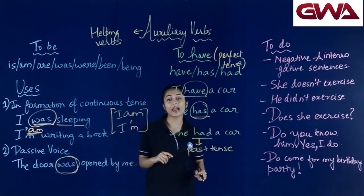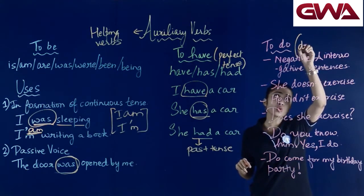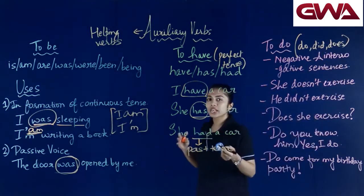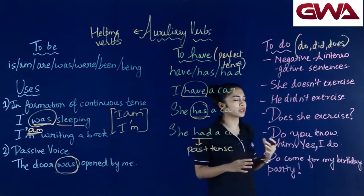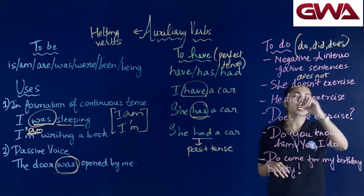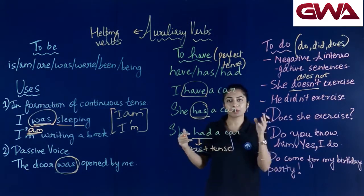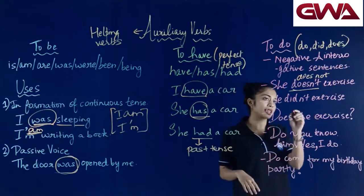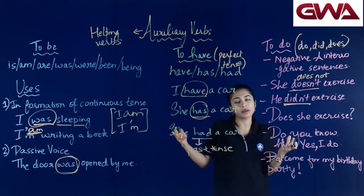हमारा third category of auxiliary verb है to do verbs। To do verbs में आते हैं words do, did, और does। ये to do auxiliary verbs mostly help करते हैं negative and interrogative sentences form करने में। For example, she doesn't exercise — doesn't जो है वो does not का contraction है। Does और do present में इस्तमाल किये जाते हैं, और did past में। He didn't exercise — यह past में है: he did not exercise।